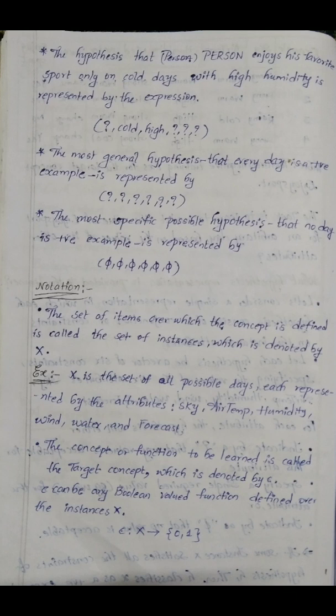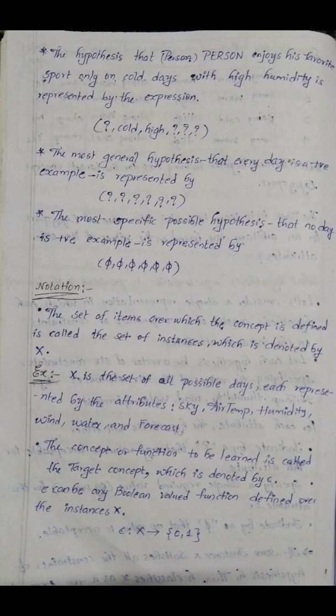The most general hypothesis is that every day is a positive example. The set of items over which the concept is defined is called the set of instances, which is denoted by X. Here there are question marks and instances of pi values.